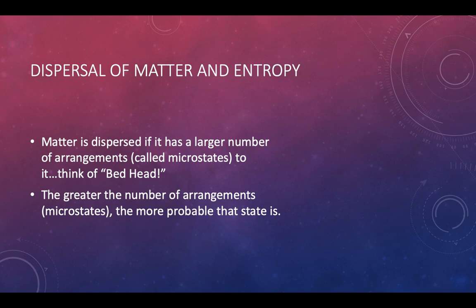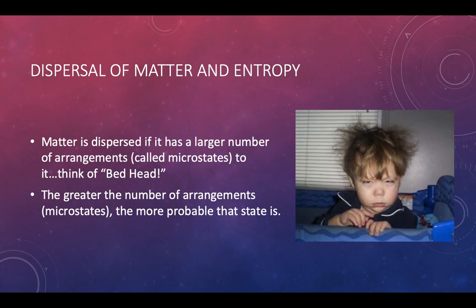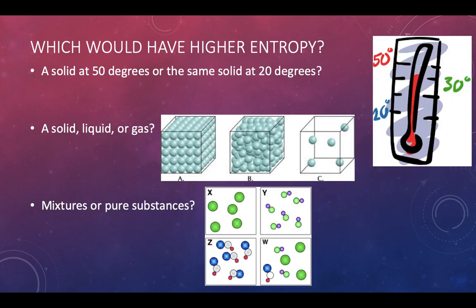What about the dispersal of matter and entropy? Matter is dispersed if it has a larger number of arrangements called microstates. Think of bedhead — we've got this picture of a kid who just woke up from a nap. The greater the number of microstates, the more probable that state is. It's more likely that when you wake up your hair looks like this kid's than for your hair to be perfectly in place. That's entropy — the state of disorder is more likely to happen.